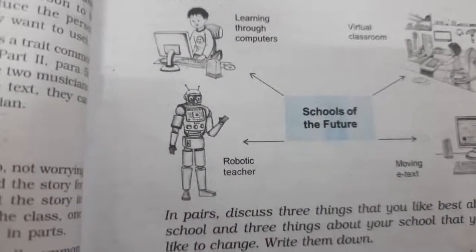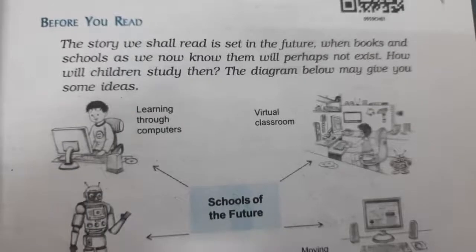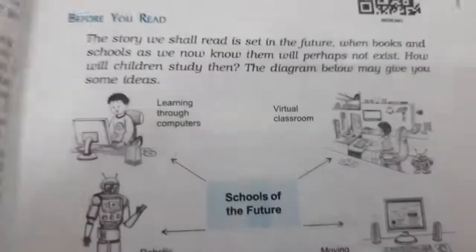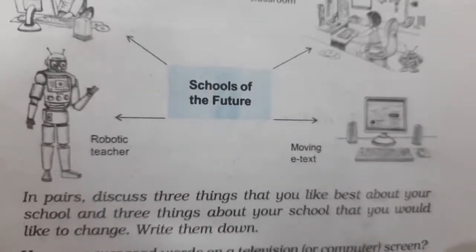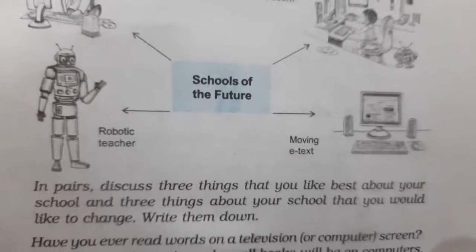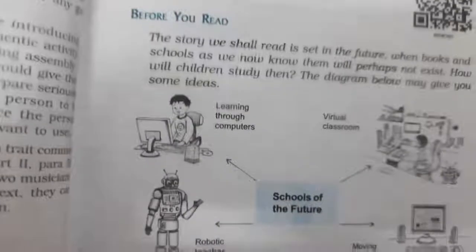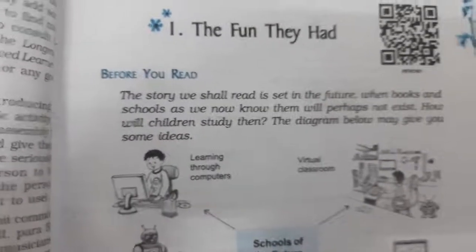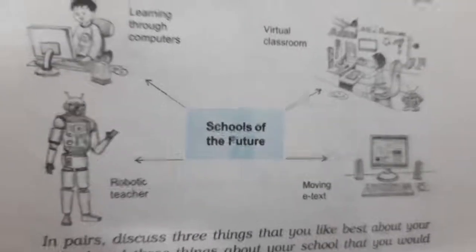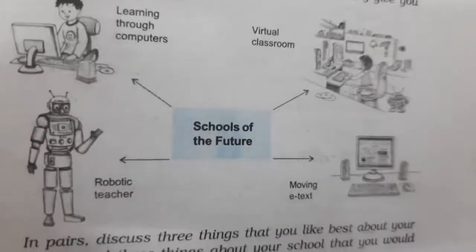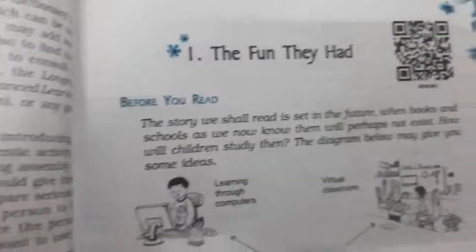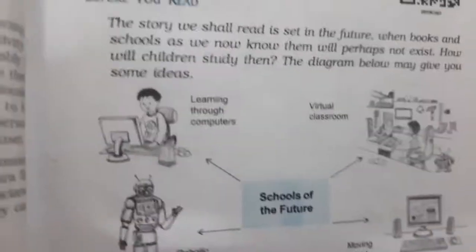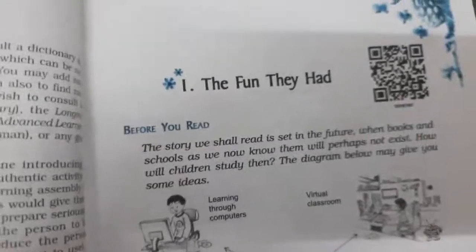Aapke joh teacher hai wo robotic hai. Joh classroom hai wo virtual hai. Virtual classroom ka matlab hoota hai aapna khud ka ek alag sa classroom. Or jitne bhi e-text hai, jaisi ke aapke joh textbook hai jismei aapke sare words still hote hai. Lekin joh future ke school hongi wo computerized hongi. To usmei sare joh words hai, e-text hai, wo move karenge, moving karte rahenge. To is prakar se yeh classroom dhya gaya hai, yahaan per aapke school ke baren bataaya gaya hai.